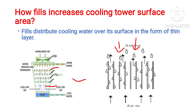The water forms a thin layer of film on the surface of the fills. Due to the formation of this thin layer of film, the surface area gets increased many times — near about 100 times. So due to this increase in surface area, the cooling capacity gets increased many times as well.